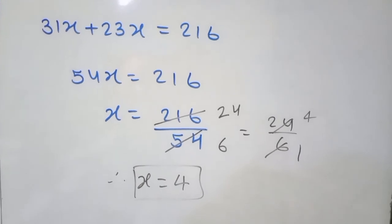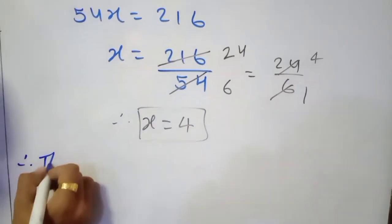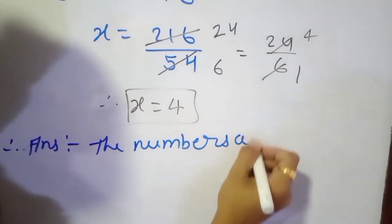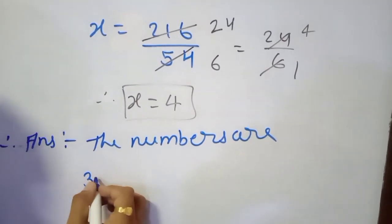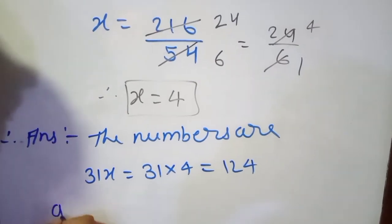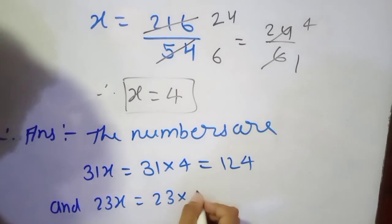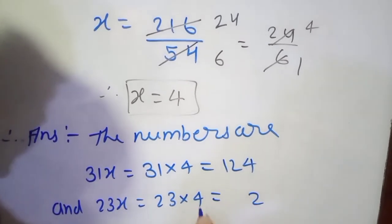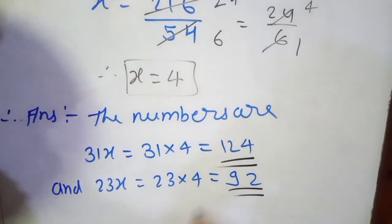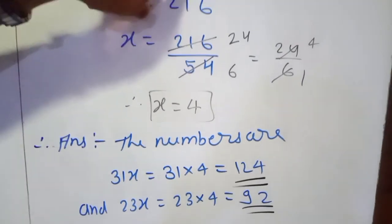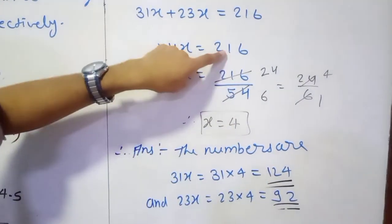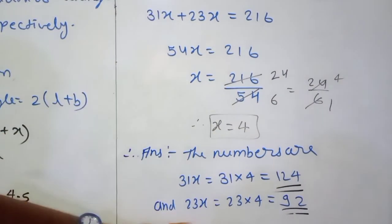Therefore we can write the answer. The numbers are: the first one is 31x equal to 31 into 4, which gives 124. And the second is 23x equal to 23 into 4, which gives 92. So the numbers are 124 and 92. As they said, the total of these two is 216. Just cross check: 4 plus 2 is 6, 9 plus 2 is 11 carry 1, 1 plus 1 is 2 — so we get 216. Here we are getting the proper answer.